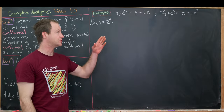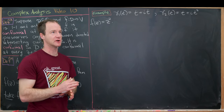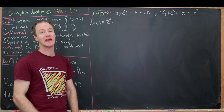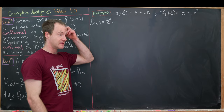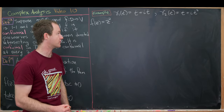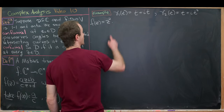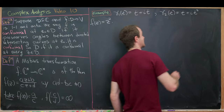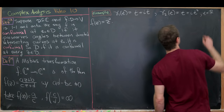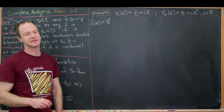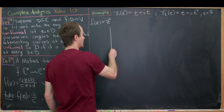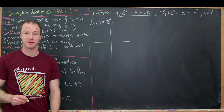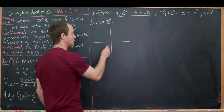For this first basic example, we're going to look at two curves, find the angle between them at an intersection point, then map these two curves under f(z) = z² and recalculate the angle, checking that this function is conformal at the appropriate point. We have γ₁(t) = t + it and γ₂(t) = t + it². Notice for γ₁, the real and imaginary parts are the same, so it lies along the line y = x — that's our curve γ₁.